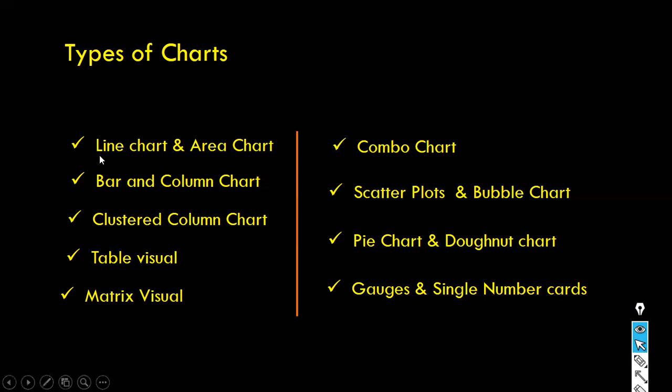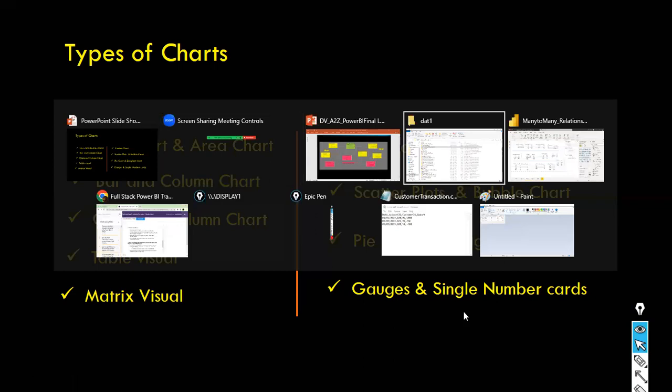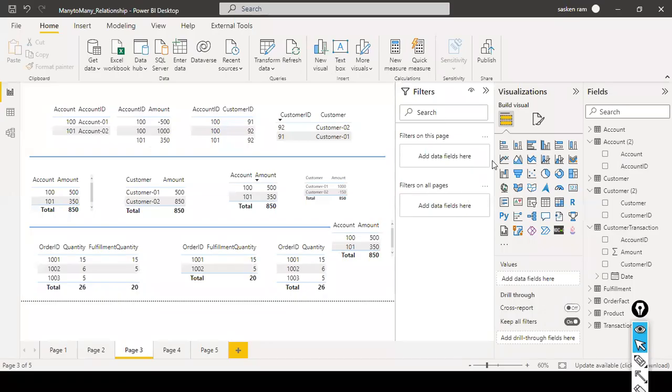Next, we will move on with understanding what are the different types of charts available. Line chart, area chart, and so on. Apart from this, we have some more charts available. If you look at the Power BI desktop, just beneath the visualization, you can see a lot of visuals are there.